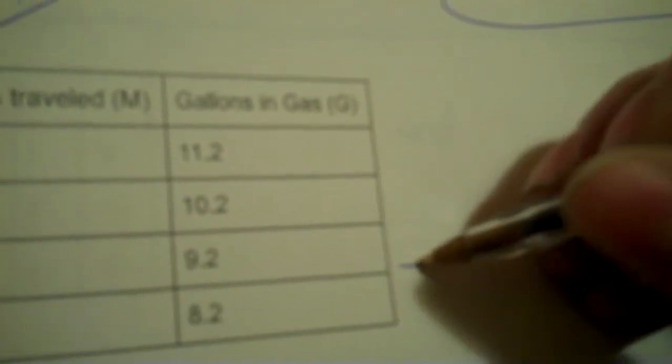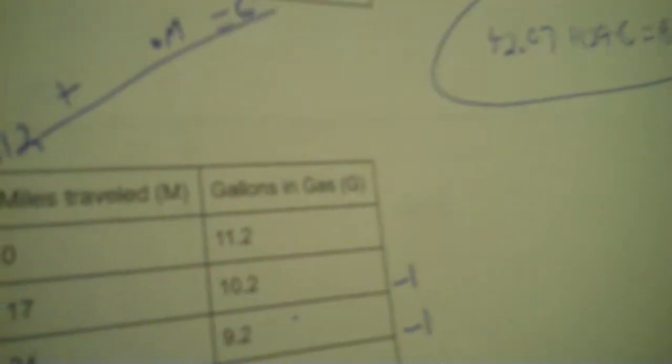So, take your 8.2 and minus your 9.2. Negative 1. That makes sense because when it goes from here to here, it drops 1. Then, 51 minus 34.17. Then, I'm going to take 9.2 minus 10.2, and that's negative 1. 34 minus 17 is 17. Now, I take 10.2 minus 11.2, and that's negative 1. 17 minus 0 is 17. So, you're going to put negative 1 over 17.